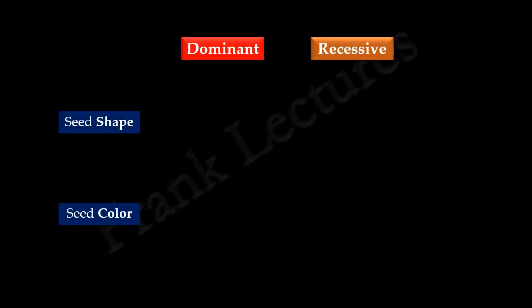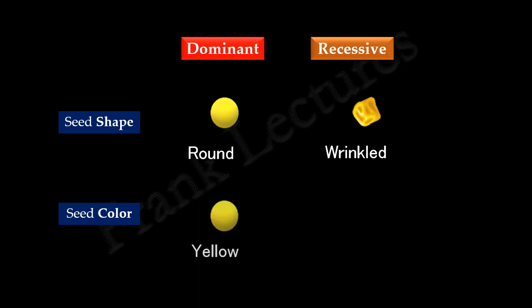From his earlier experiments, Mendel had already established that round seed shape is dominant over wrinkled seed shape, and yellow seed color is dominant over green seed color.